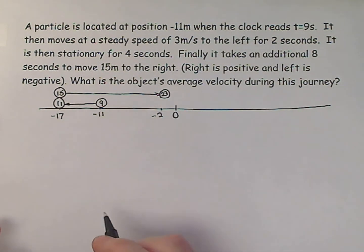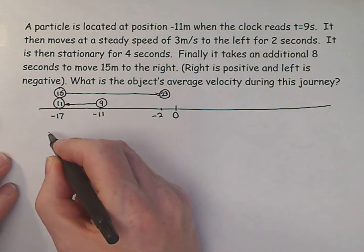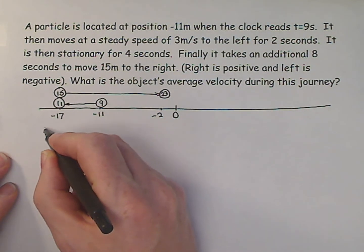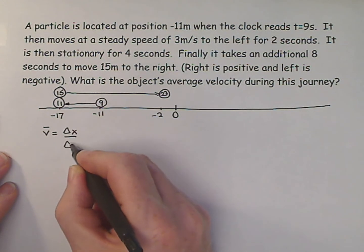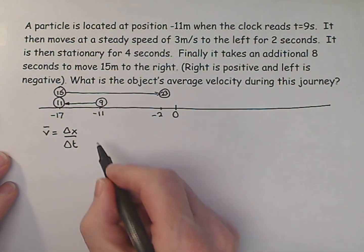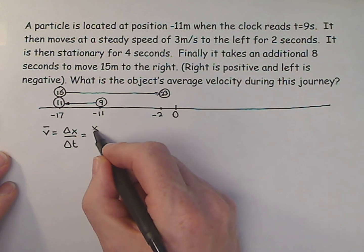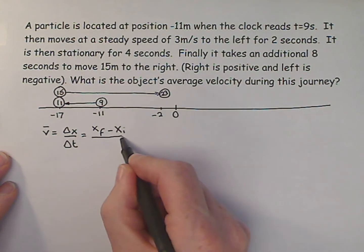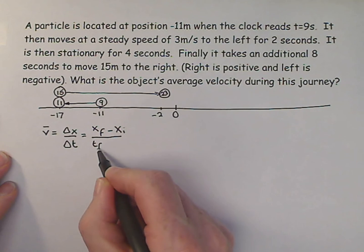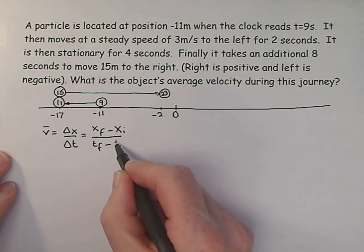So our average velocity is equal to our displacement divided by our time taken. And that is equal to our final position minus our initial position over our final time minus our initial time.